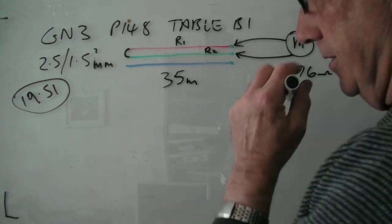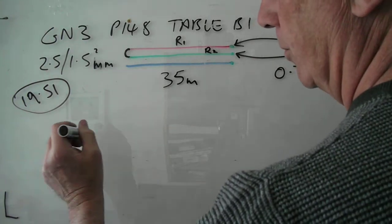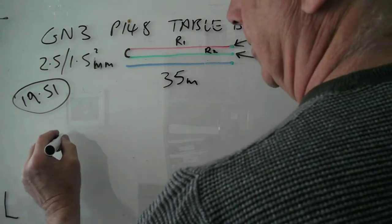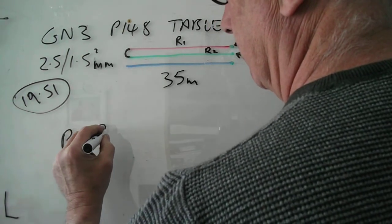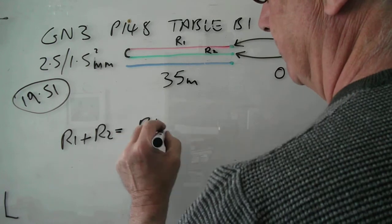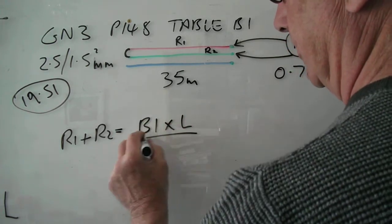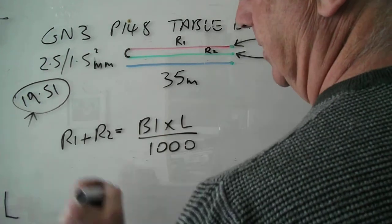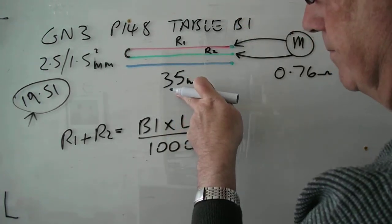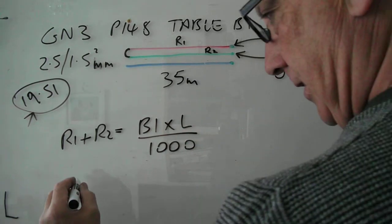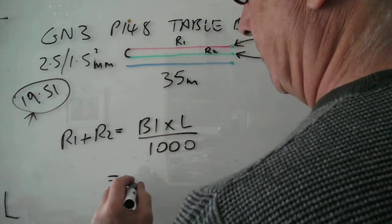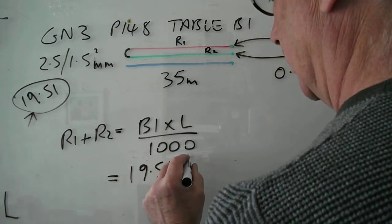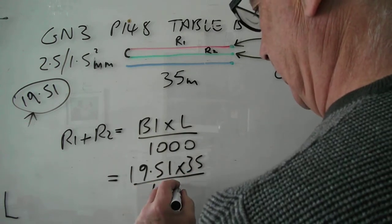So we know the formula is effectively for resistance that cable R1 plus R2 in other words equals B1 times the length divided by a thousandth. So what we should be getting is 19.51 times 35 divided by a thousandth.